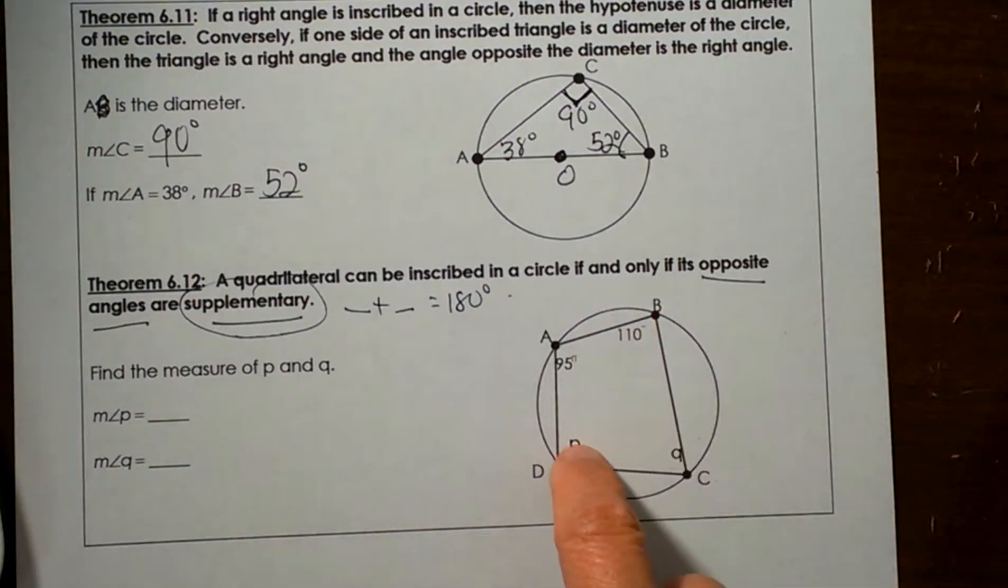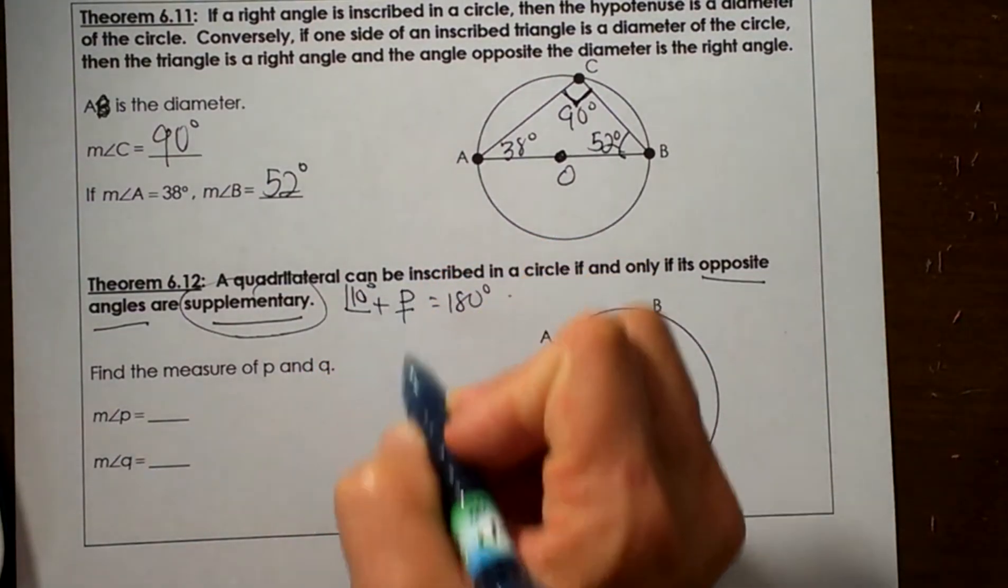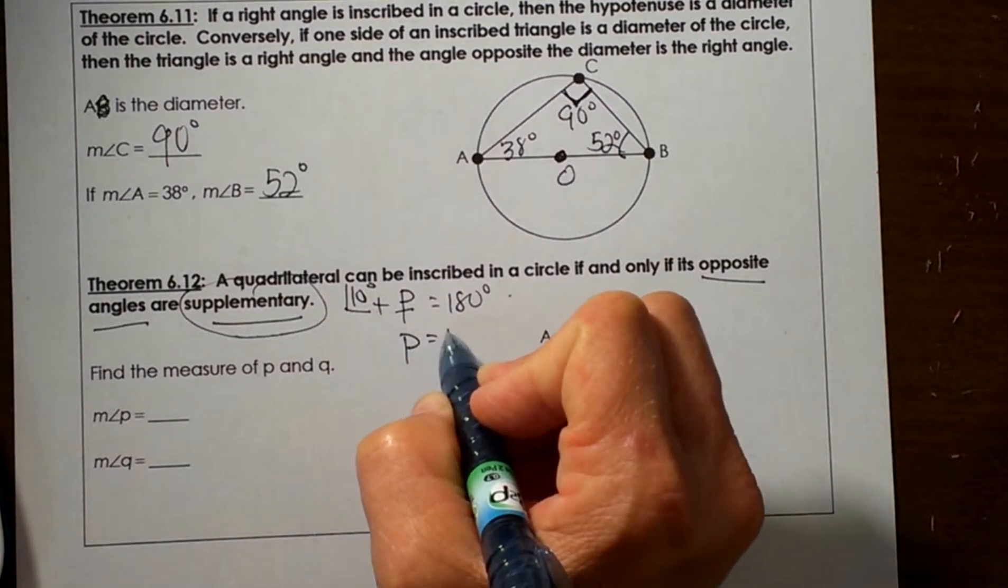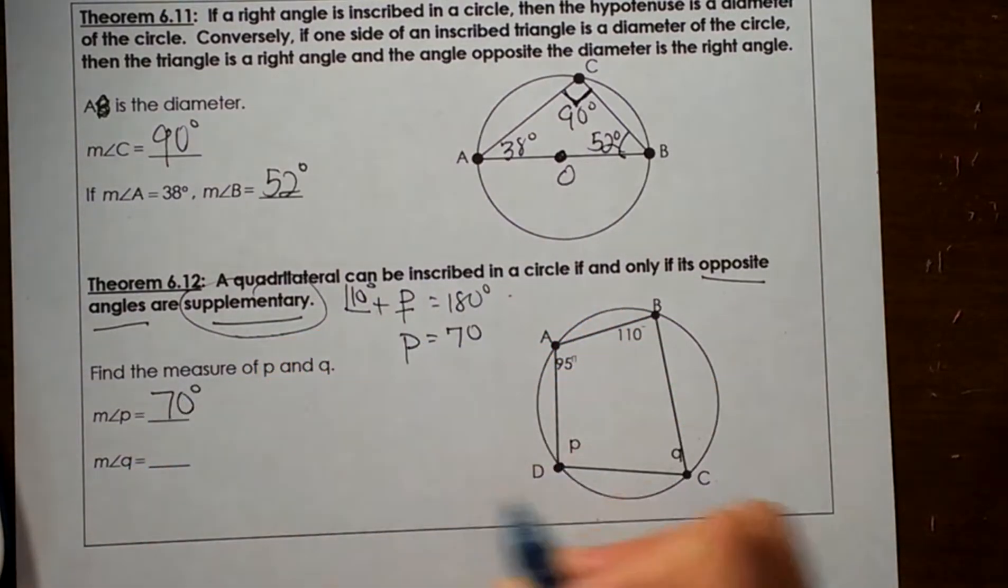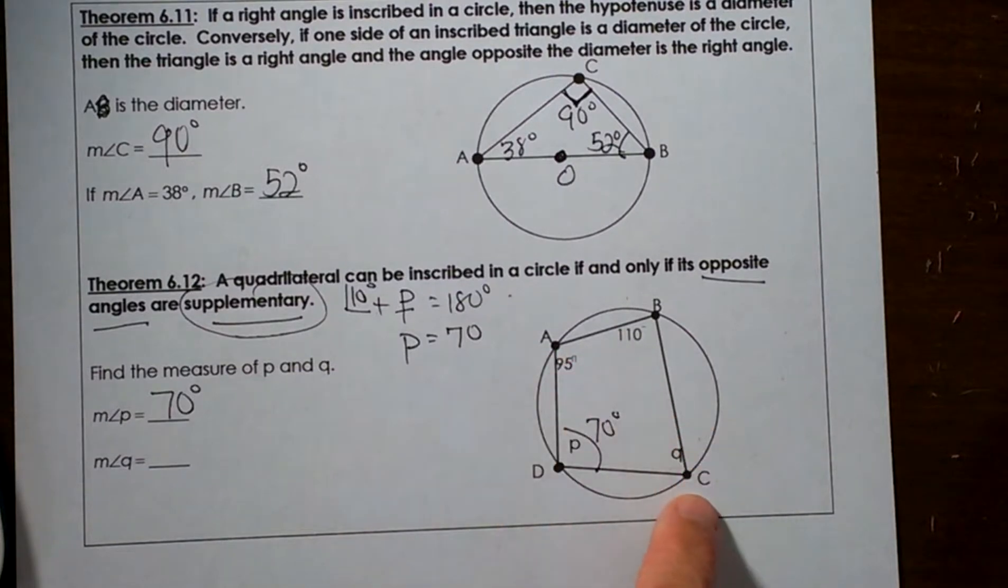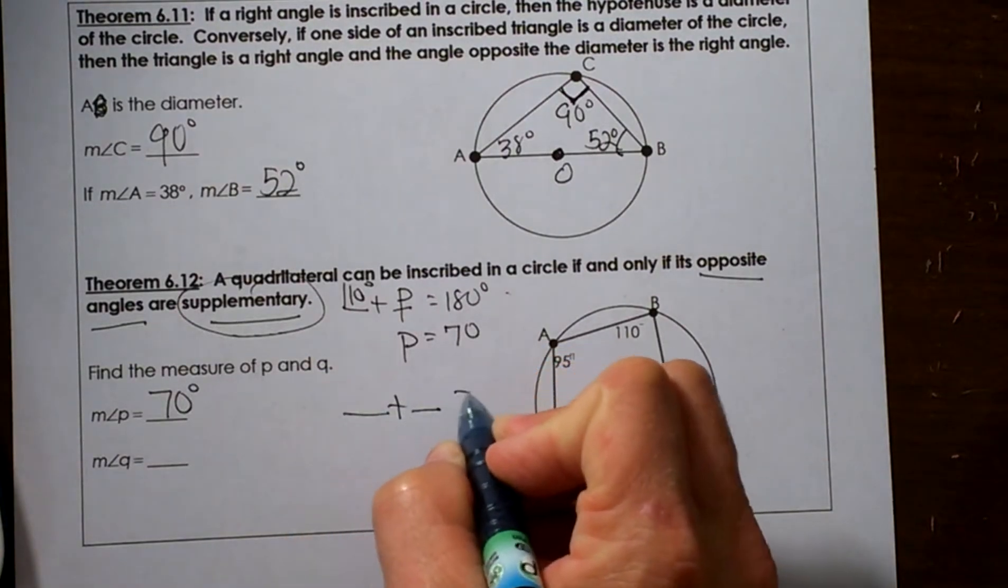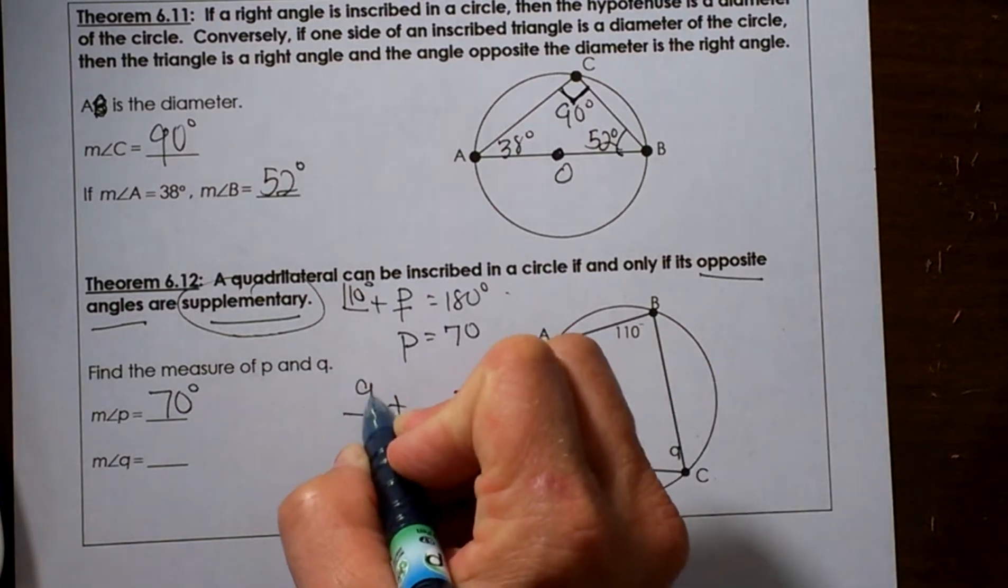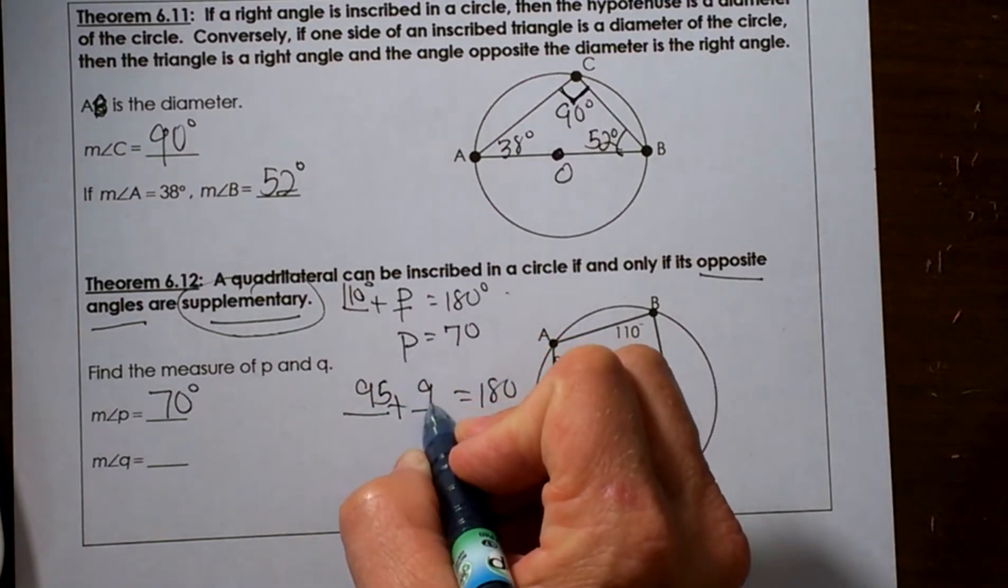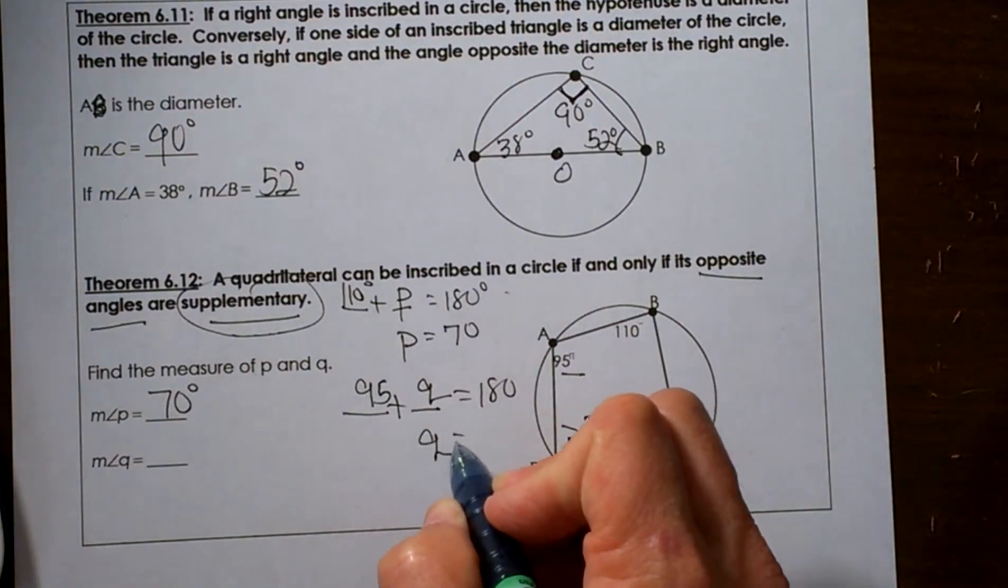So we are trying to find the variable P. We know this is 110, so we solve for P, so that means P must be 70 degrees. So angle P is 70, or the value of P is 70, that is angle D. Okay, same thing happens here. A and C are opposite angles and they have to be supplementary. So two angles add up to 180. We know one of them is 95, so what's the other one? The other one is Q, so let's solve for Q. Subtract 95 from both sides, so you get Q is 85.